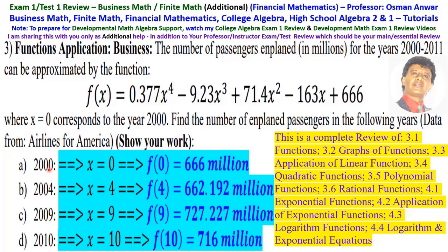In 2000, x is 0. That's the starting point. f(0) is you substitute every x by 0. So this is 0, then this is 0, this is 0, this is 0. That is, f(0) in 2000 it was 666 million.